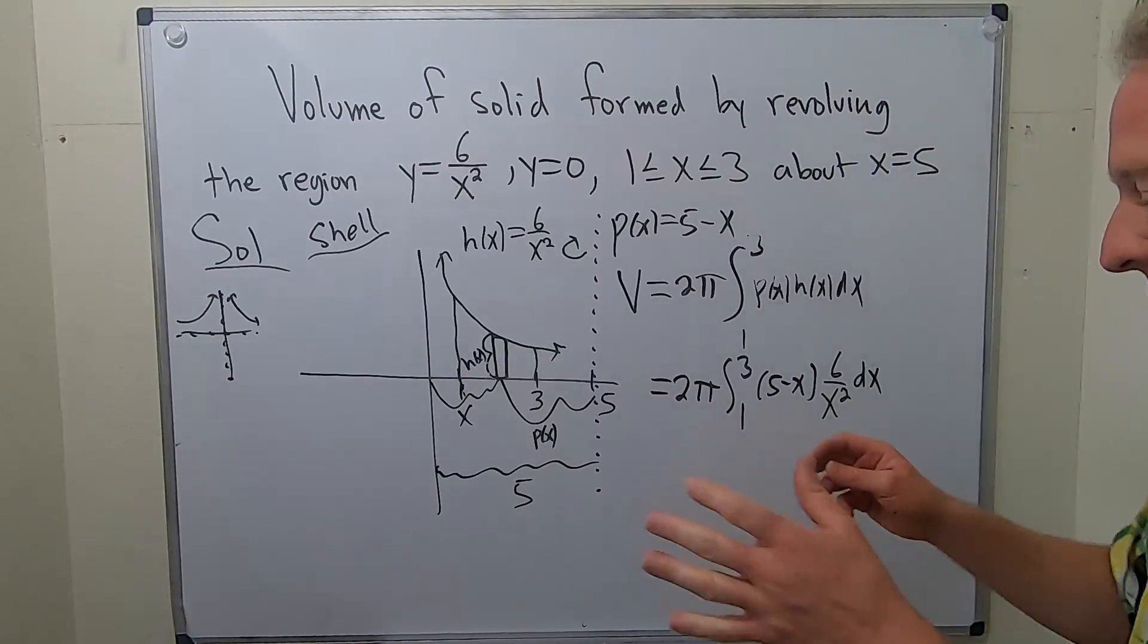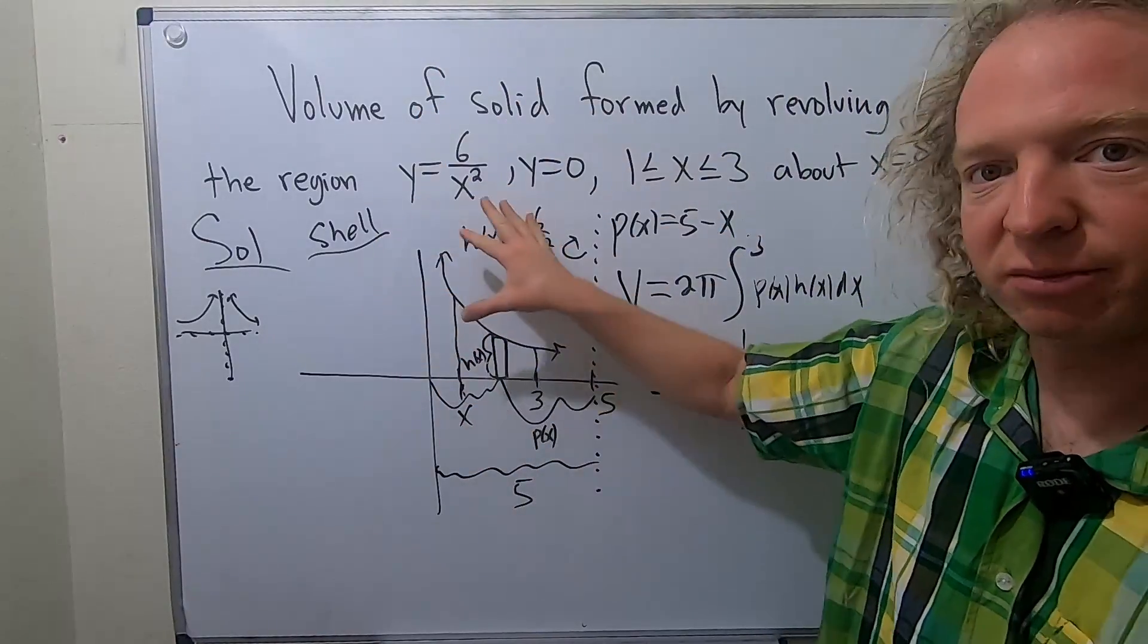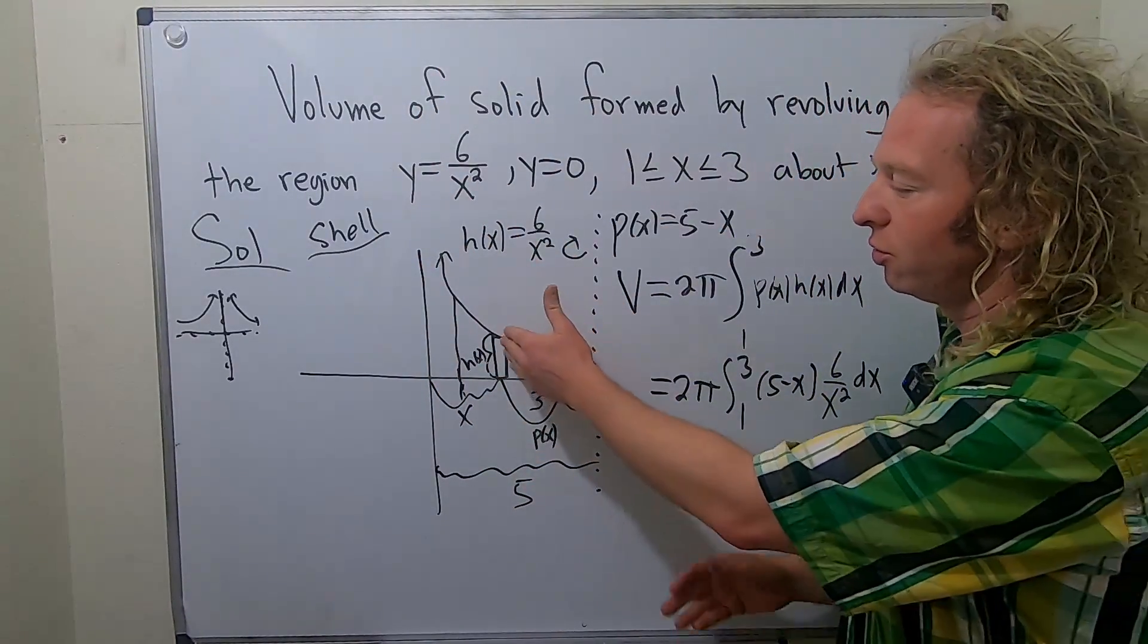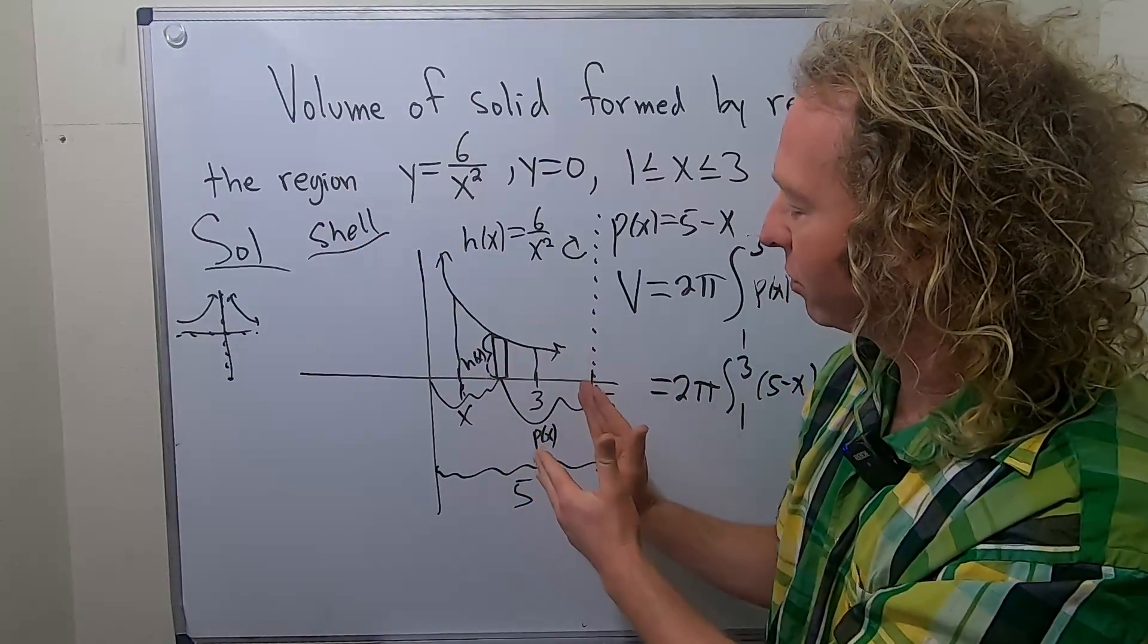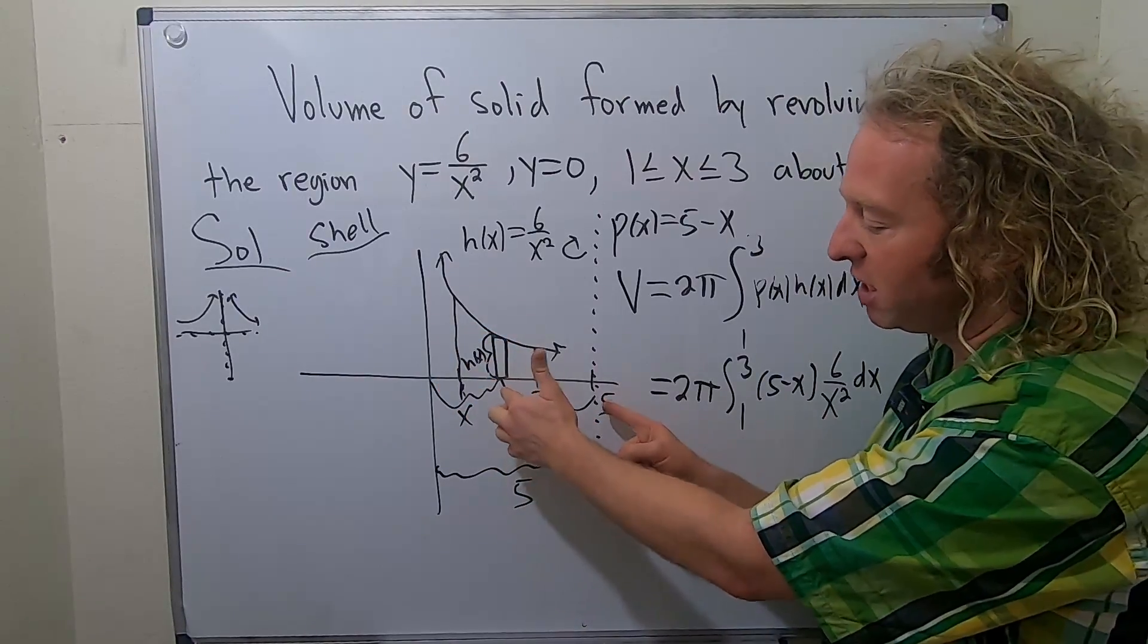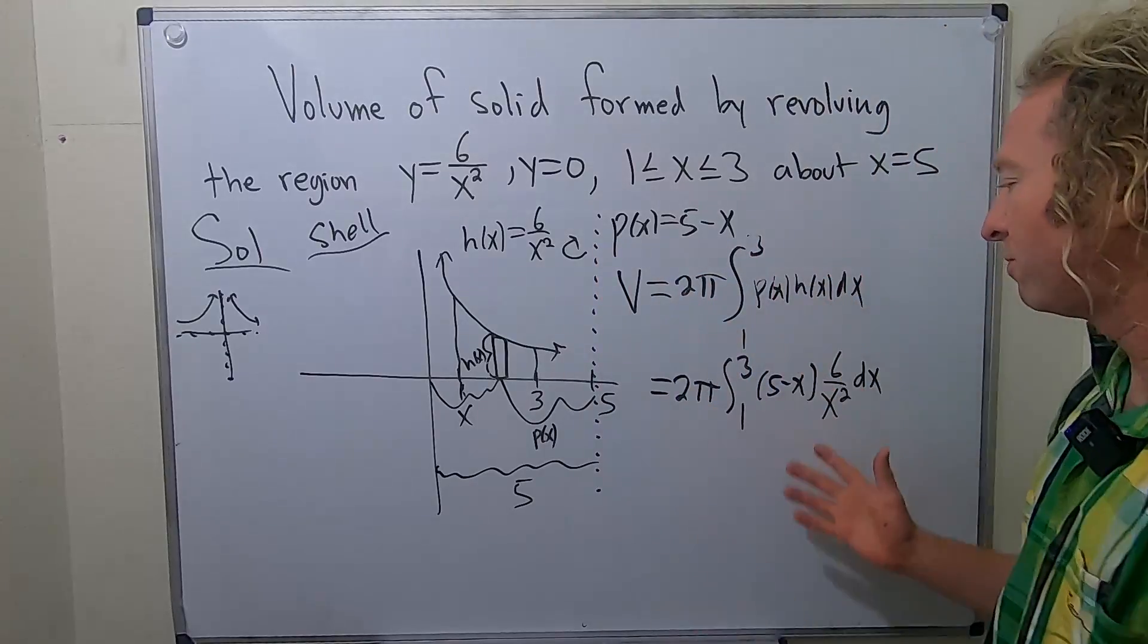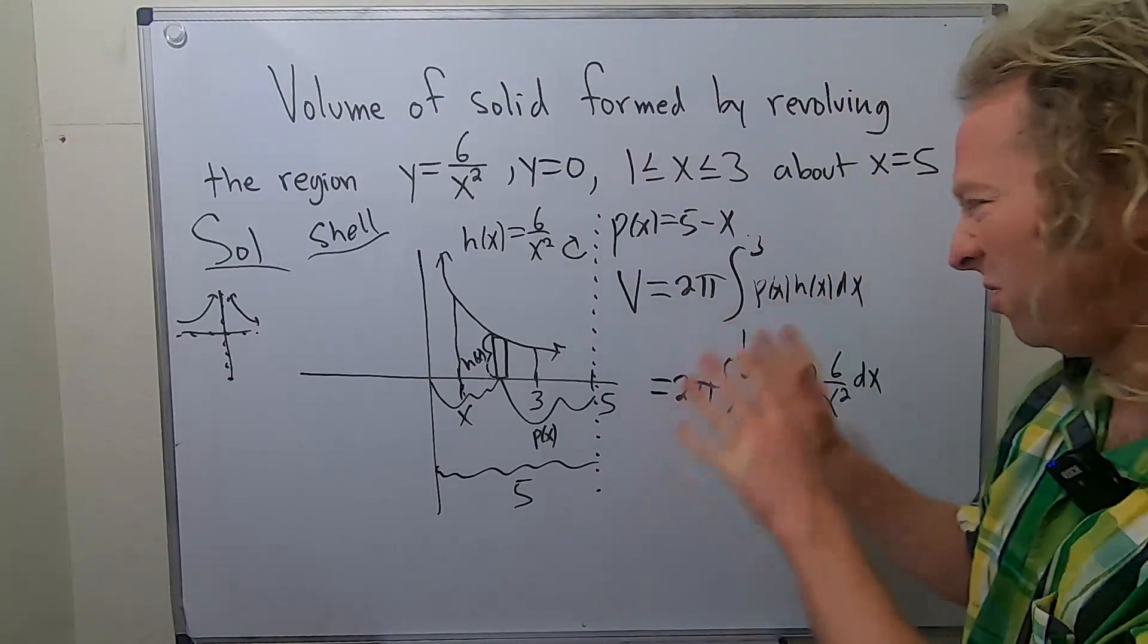And now the last thing to do is maybe just integrate this and get the answer. So recap. Step one is to draw the picture. Draw the picture and sketch your region. Step two, you draw your rectangle. Remember, shell is parallel to your axis of revolution. h is always going to be the longer part of the rectangle. p is always the distance from the skinny part to the axis. And then just write down h and p, use the formula, and then I'll leave it to you to finish the integration.